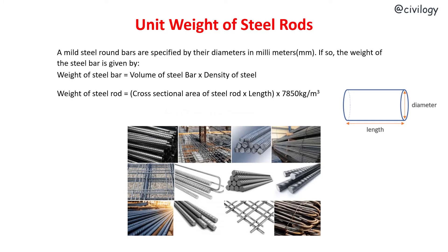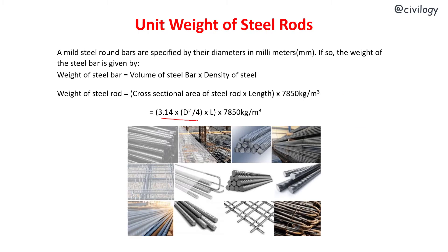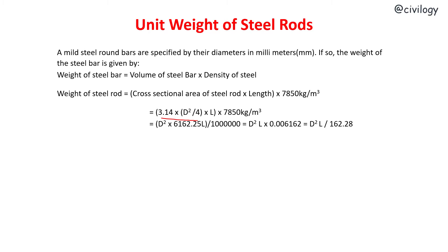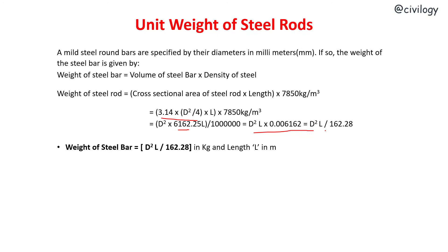The cross-sectional area of the steel rod is (3.14 × D²) / 4, multiplied by length, multiplied by 7,850. Here diameter D is in mm, so we convert to meters. When 3.14 is multiplied by 7,850 we get 6,162.25, giving us D² × L / 10⁶ × 6,162.25, which simplifies to D²L / 162.28. So the formula for weight of steel bar is: Weight = D²L / 162.28 kg, where L is in meters.